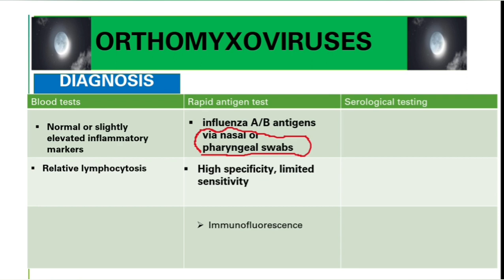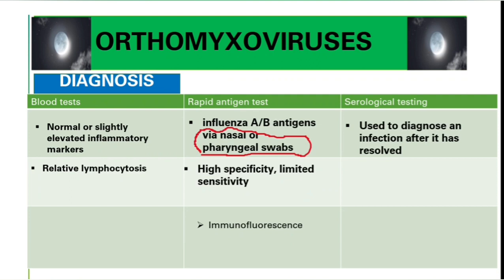Serological testing is used mainly for diagnosis after an infection has resolved — it will give a negative result if tested too early, such as two days after infection. Infection is likely if serum antibody titers increase by fourfold within two weeks after acute illness. Methods used include complement fixation and hemagglutination inhibition tests.